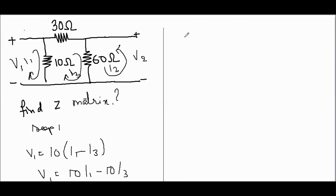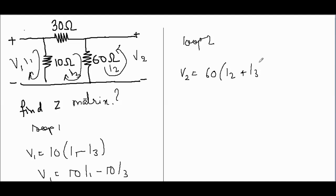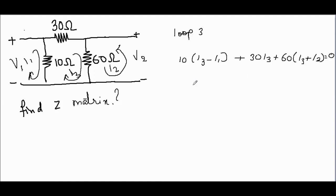Now apply KVL at loop 2. We get V2 is equal to 60(I2 plus I3), so our equation will be: V2 = 60·I2 plus 60·I3. Now apply KVL at loop 3.